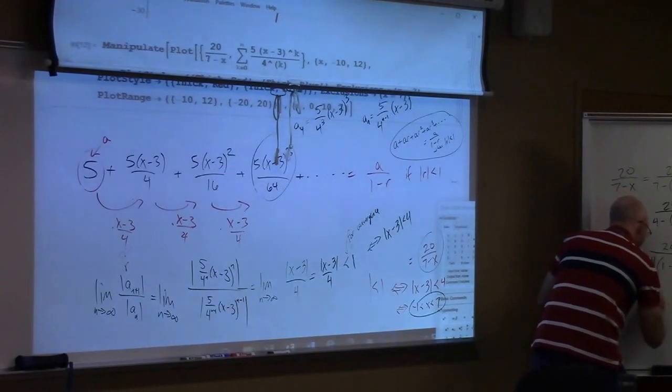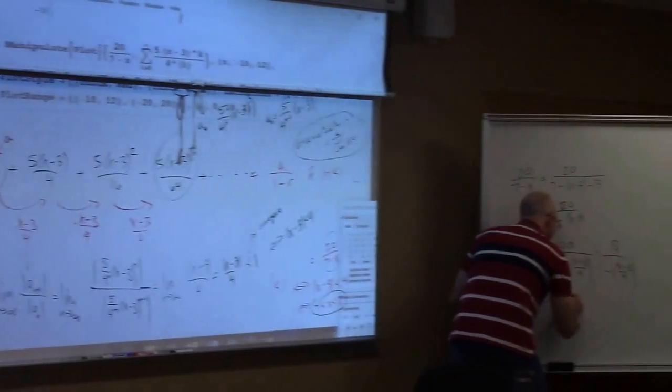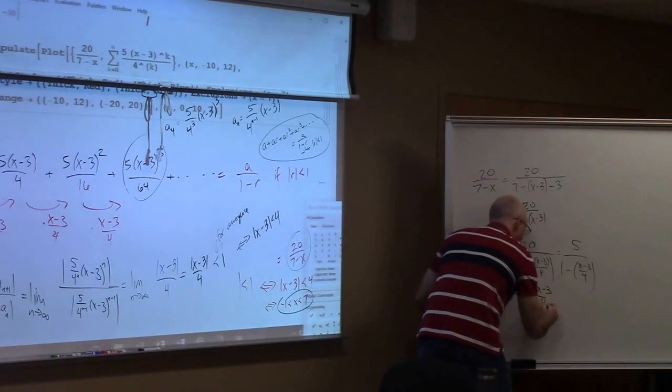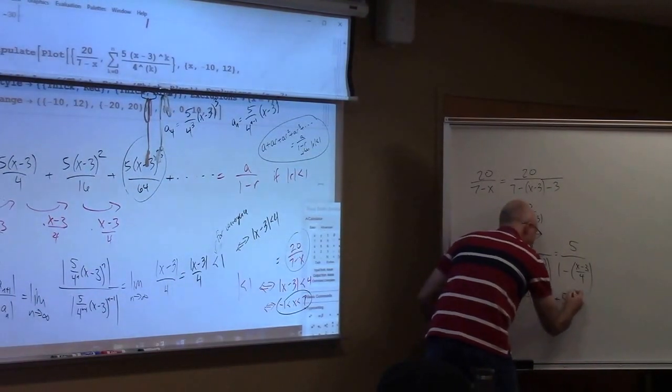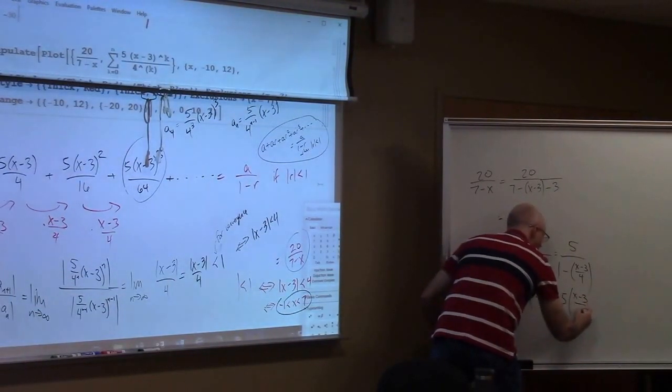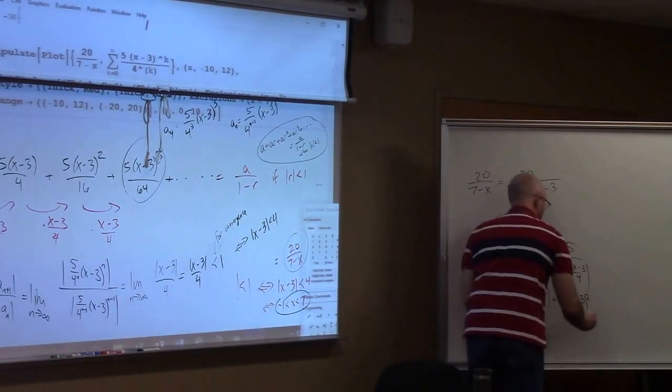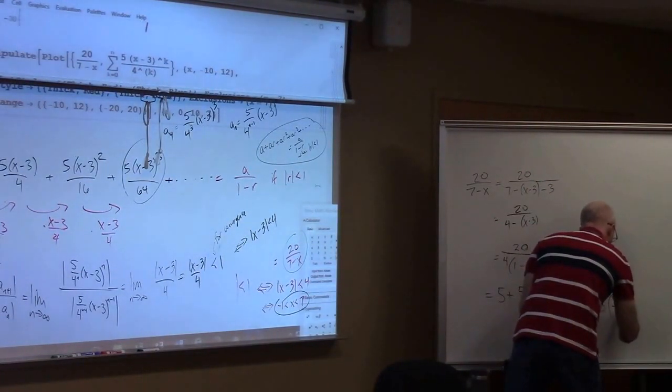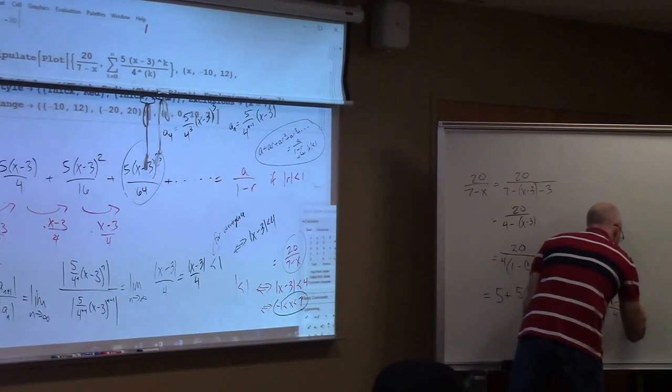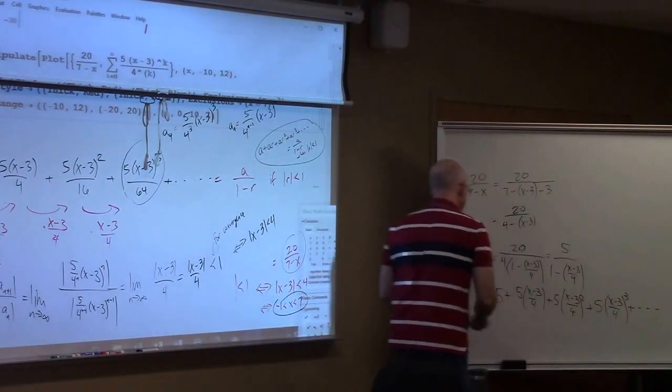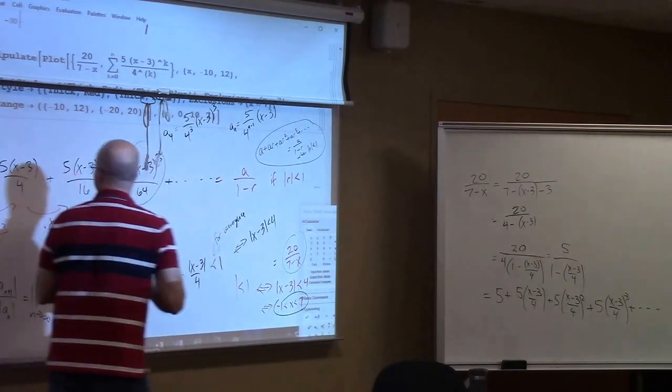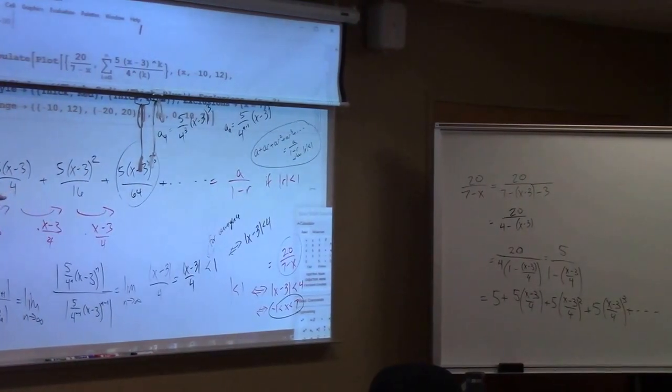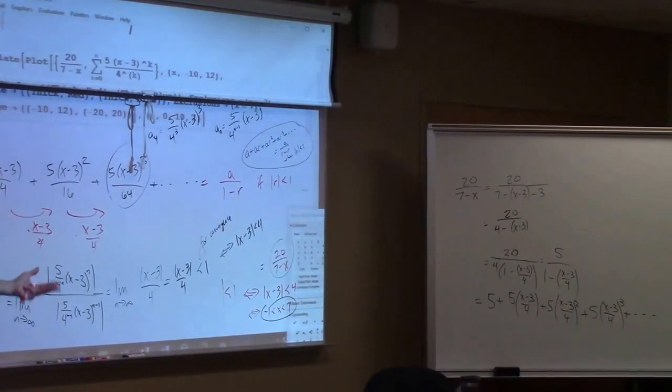This equals 5 plus 5 times x minus 3 over 4 quantity squared, plus 5 times x minus 3 over 4 quantity cubed, etcetera. Which does simplify to exactly this. We did it in reverse with some tricky algebra.